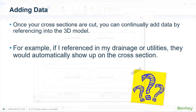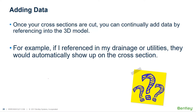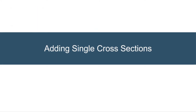Once your cross-sections are cut, you can continually add data by just referencing it into the 3D model. For example, if I went back and referenced in my drainage or utilities to the 3D model, they would automatically show up on the cross-sections — no need to recut them. As you add data to the 3D model, it will just show up on the cross-sections.